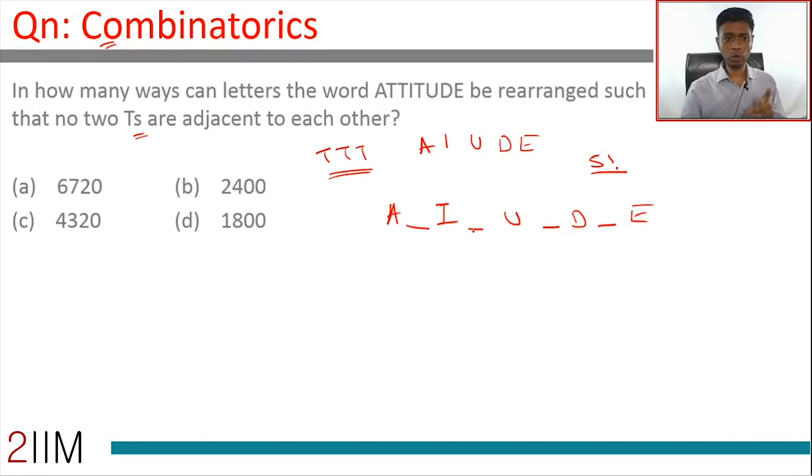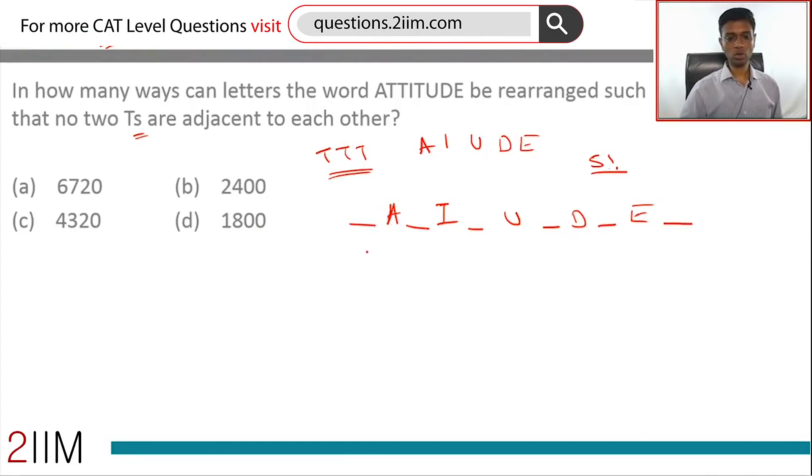On top of all this, we can have a T right at the beginning or right at the end. So out of these six slots, if some three were T, our conditions would be satisfied.